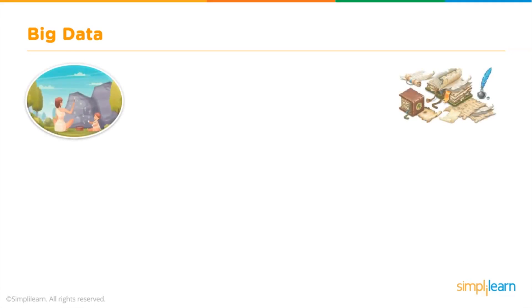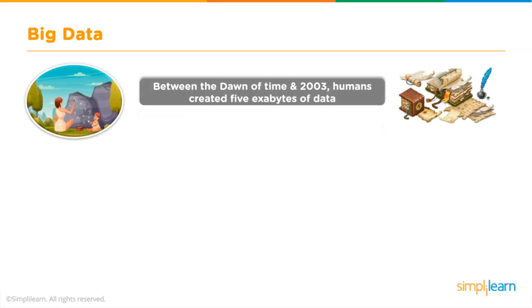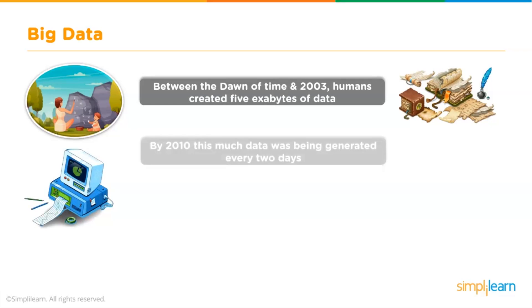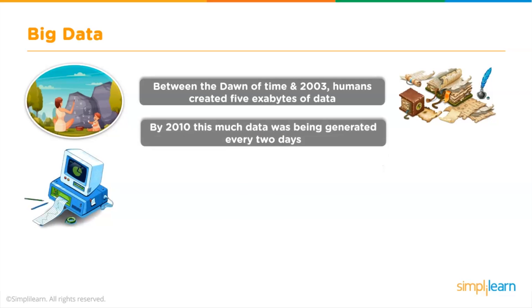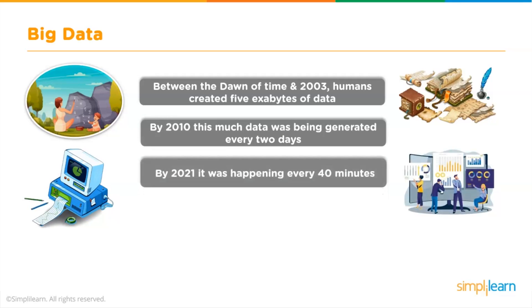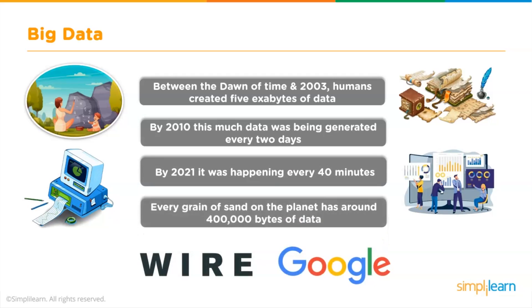Big Data. The name itself says that it contains a massive amount of data. According to a Wired article, Google's CEO mentioned that before 2003, humans had created 5 exabytes of data, and by 2010 this much data was being generated every 2 days, and by 2021, it was happening every 40 minutes. In fact, there is a saying that every grain of sand on the planet has around 400,000 bytes of data.